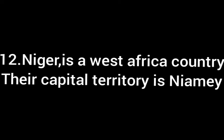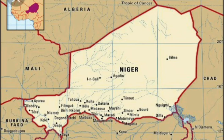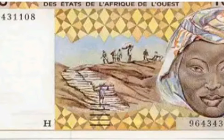Number 12, Niger, popularly called Niger. It is a West African country. Their capital territory is Niamey. The name of their president is Mahamadou Issoufou. They gained independence on 18th December, 1958. This is the Niger flag, map, and currency.